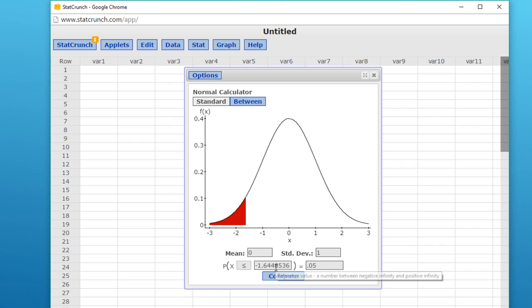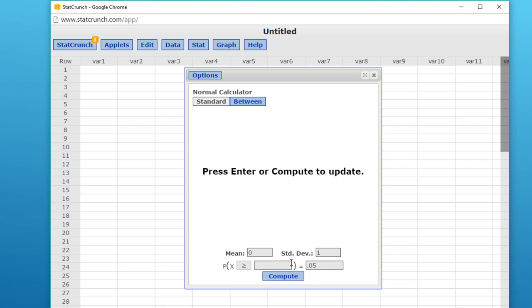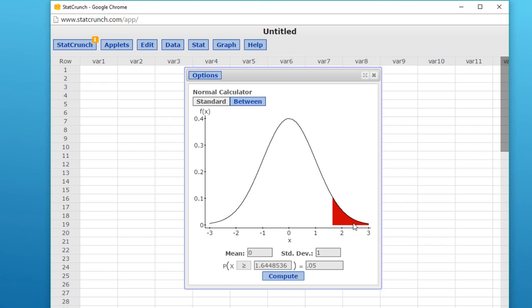Now we know by symmetry the upper tail, the right tail, would be just the positive version of that, +1.645, but we can just check. I'm going to put in 0.05 again and click Compute, and there we see the upper rejection region, again, 1.645. Anything a z greater than 1.645 would mean the test is significant and reject the null.